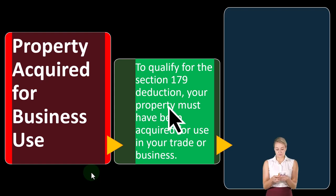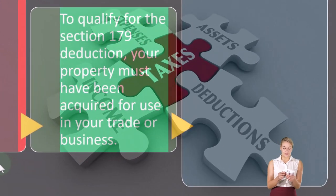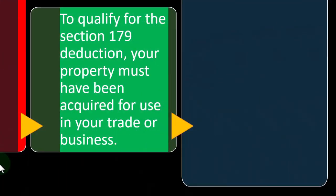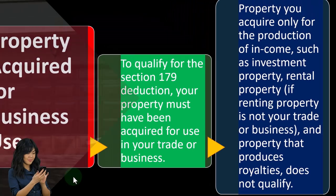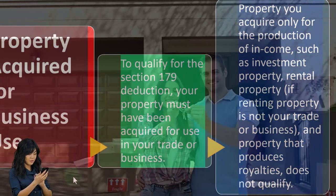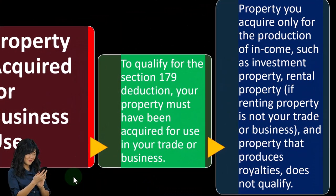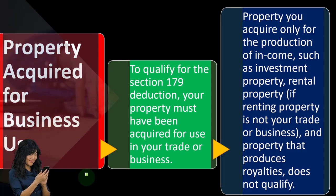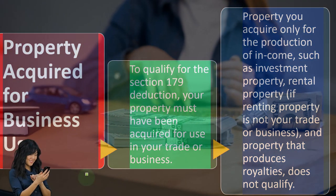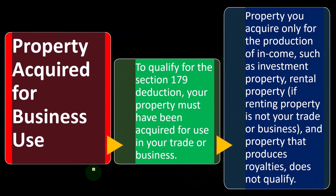To qualify for the Section 179 deduction, your property must have been acquired for use in your trade or business. That's a general rule for deductions — business-related deductions is generally what we're thinking of. What kinds of things should we be able to deduct? Those things we had to consume in order to generate revenue. So property you acquired only for the production of income, such as investment property, rental property (if renting property is not your trade or business), and property that produces royalties — these do not qualify.